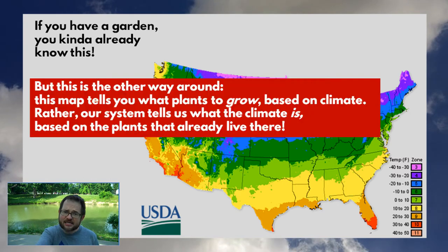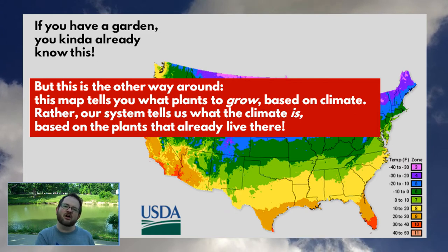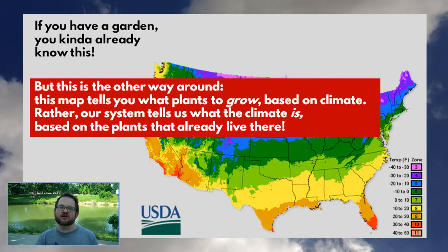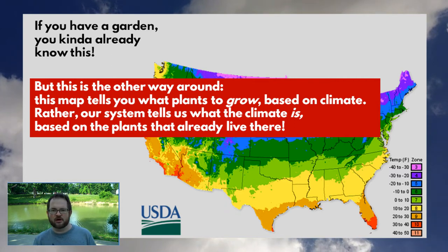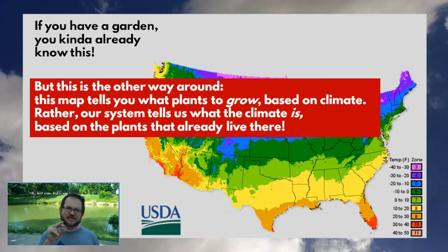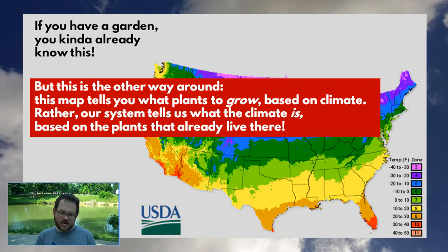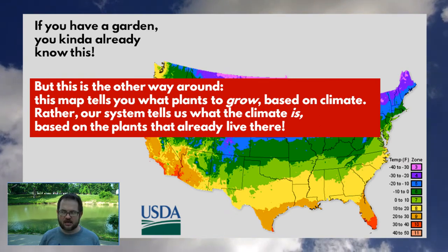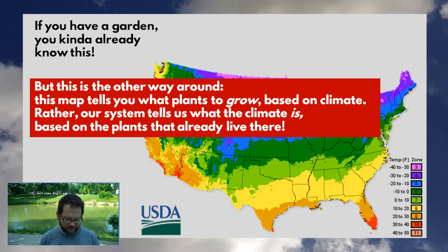This kind of plant hardiness map tells you, based on the climate, what will grow there. Köppen figured out that it works the other way around too — based on the plants that are growing there natively, you can say a lot about the kinds of climate that the region must have.